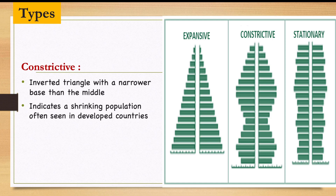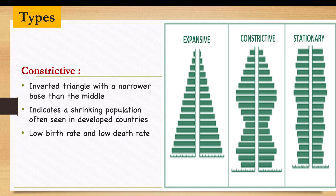In developed countries, health facilities are well improved — health delivery and the care system are strong — so you see many of the aged reaching a high life expectancy level before they die. These countries are recording a low birth rate, so they don't have a typically youthful population as seen in the expansive type.